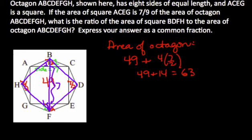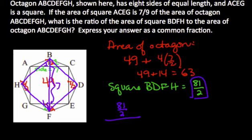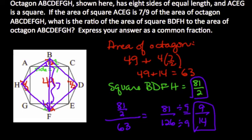Now the area of BDFH that I just found, square BDFH, we just found had an area of 81 halves. And this asks us to find the ratio. So the ratio of square BDFH area, 81 halves, divided by the total octagon's area of 63. I can simplify this to 81 over 126. Dividing both the numerator and denominator by 9, I get a ratio of 9/14ths. And that's actually the final answer, what I'm looking for.